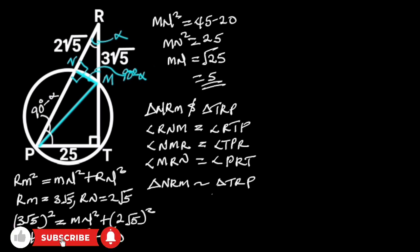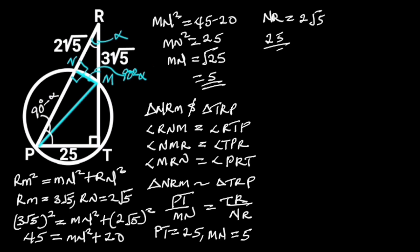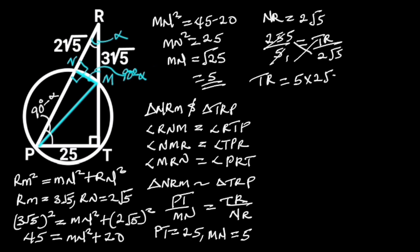The proportionality of their corresponding sides is: PT over MN equals TR over NR. PT is 25, MN is 5, and NR is 2√5. Substituting these values: 25 over 5 equals TR over 2√5. Since 25 ÷ 5 = 5, by cross multiplication TR equals 5 times 2√5, which equals 10√5. Hence TR equals 10√5.